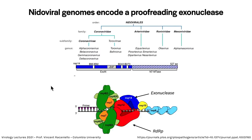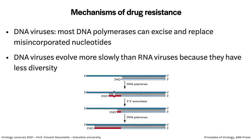The coronavirus exonuclease reduces error rates below other RNA viruses, but they still make mistakes — it just makes certain antiviral drugs harder to develop. For DNA viruses, DNA polymerases also make mistakes but have associated exonucleases that detect mismatches, excise them, and allow the polymerase to fix them — similar to the coronavirus ExoN. This is why DNA viruses make fewer errors and evolve more slowly than RNA viruses.